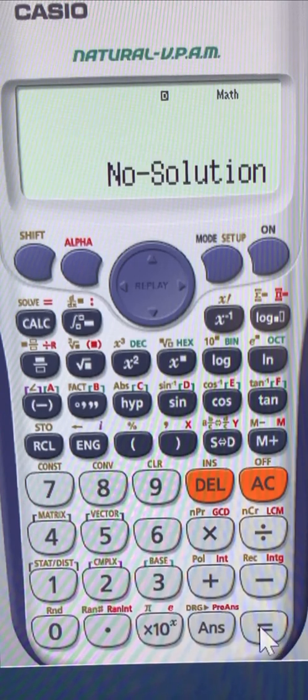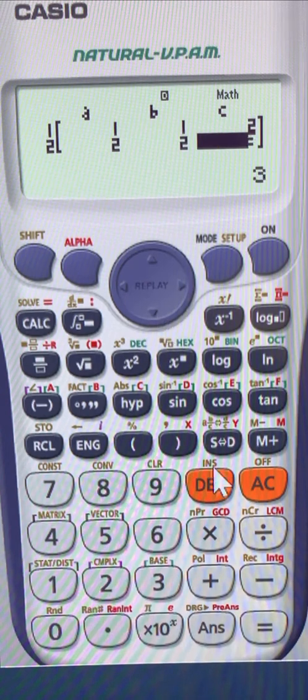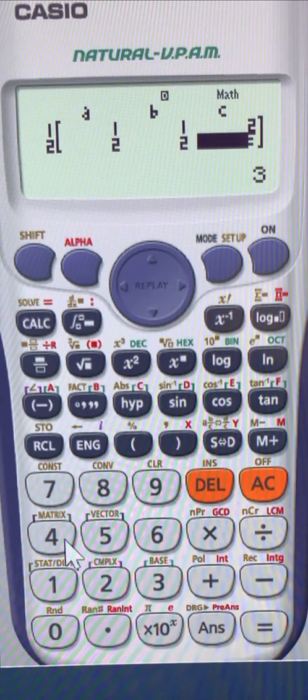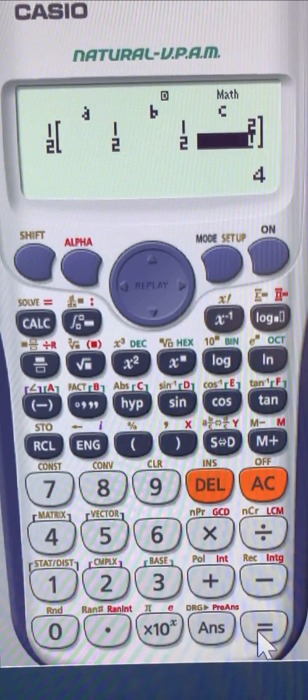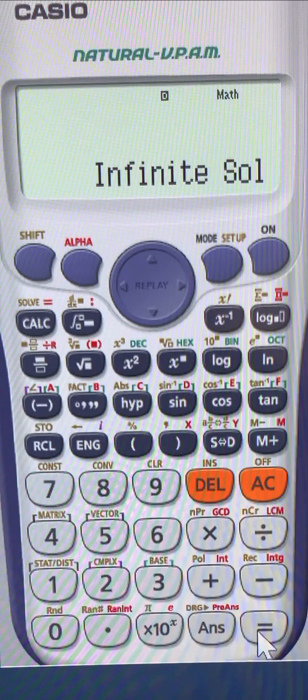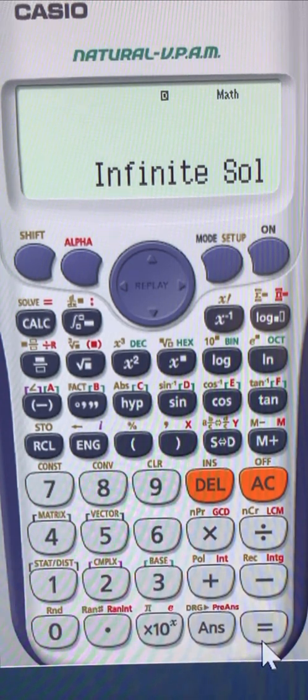And the last one is when we have, for example, the second equation here, let's say if we have 4, then the second equation is like a multiple of the first, so they are the same line. So this means an infinite number of solutions, as you can see. So I hope that this video helped you understanding how to use your Casio calculator to solve systems of linear equations. Thank you.